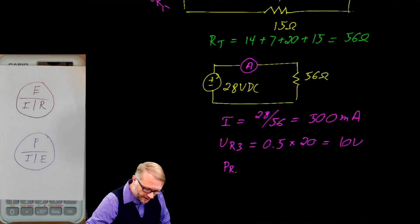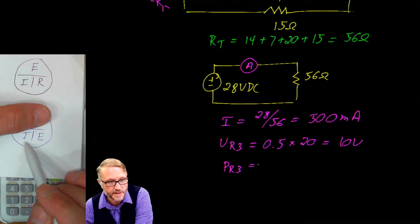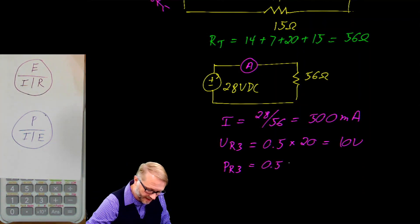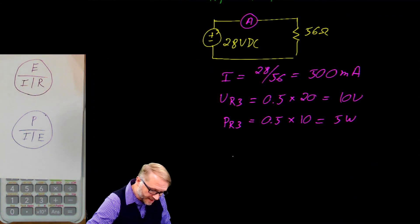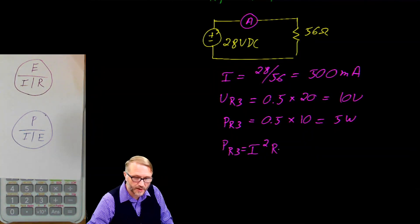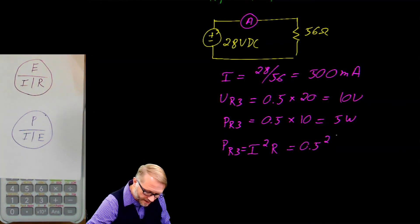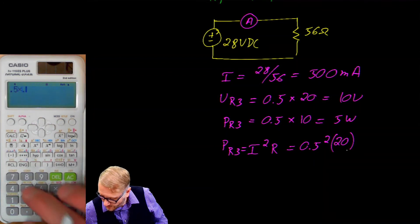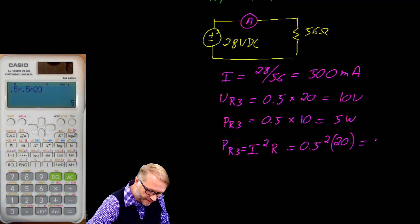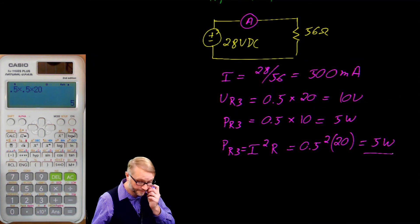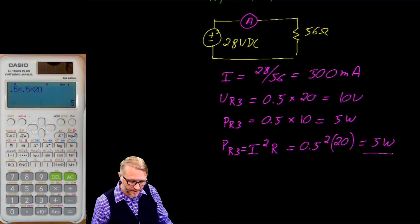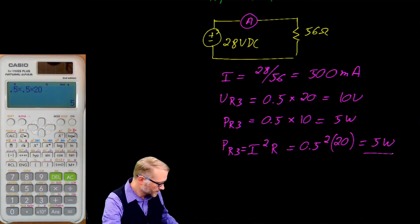We could also calculate the power through R3. Power equals current times voltage: 500 milliamps times 10 volts — that's 5 watts. We could also use current squared R: 0.5 squared times 20. That gives 5 watts as well. So you're starting to see there are multiple ways to solve these circuits. In a follow-up class, we'll present the voltage divider, which will make this even easier.